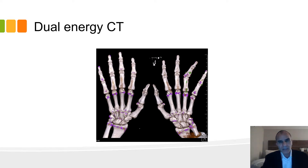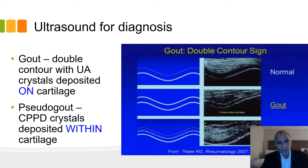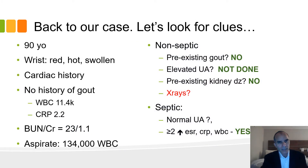A couple of additional tools that might be helpful for diagnosis: dual energy CT is specific for gouty deposits — very interesting. Ultrasound has also been used for gout. Specifically, there's the double contour sign, which you can see here, where crystals deposited on the cartilage are consistent with gout. Pseudogout crystals are deposited within the cartilage and appear as a line between the two cartilaginous surfaces. A well-trained ultrasonographer might also give you an underlying diagnosis.